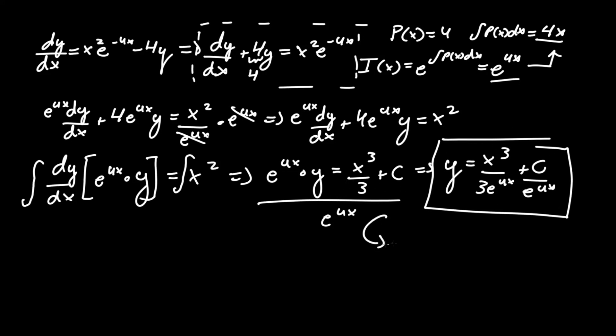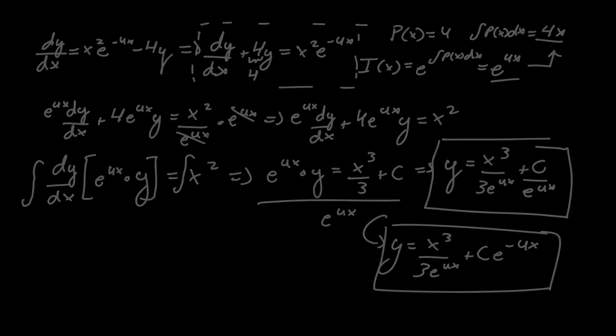If you want, you could rewrite this as y equals x cubed over 3 e to the 4x plus c e to the negative 4x, if you want the constant to be on the left side, not on top. But this is the same answer. It's a family of solutions, so c could be multiple. This is the answer for this first order linear differential equation. If you have any questions, please leave in the comments below and good luck.